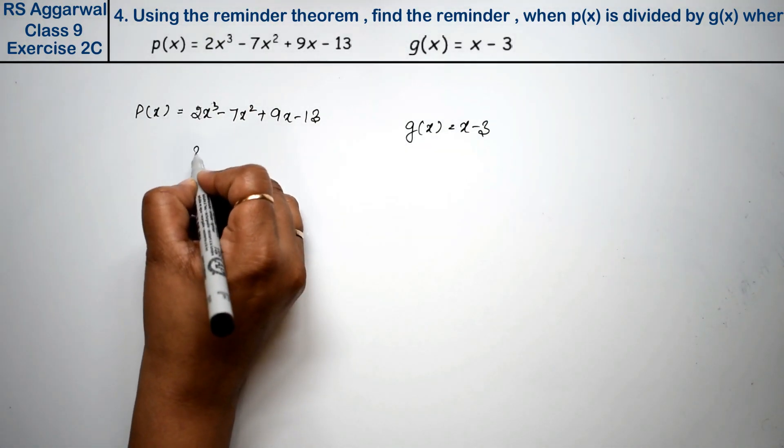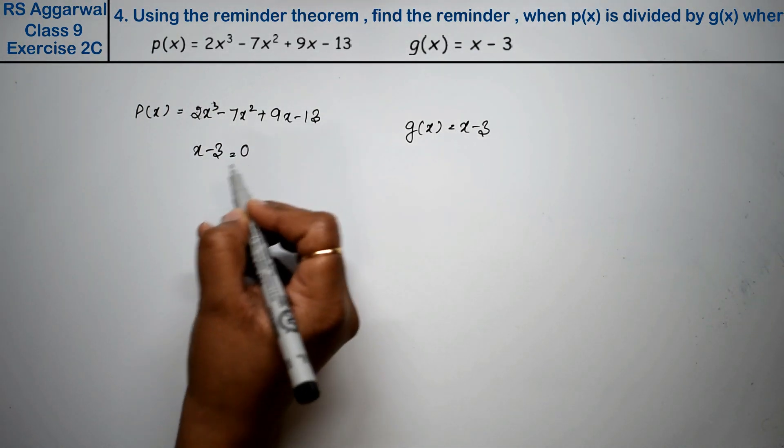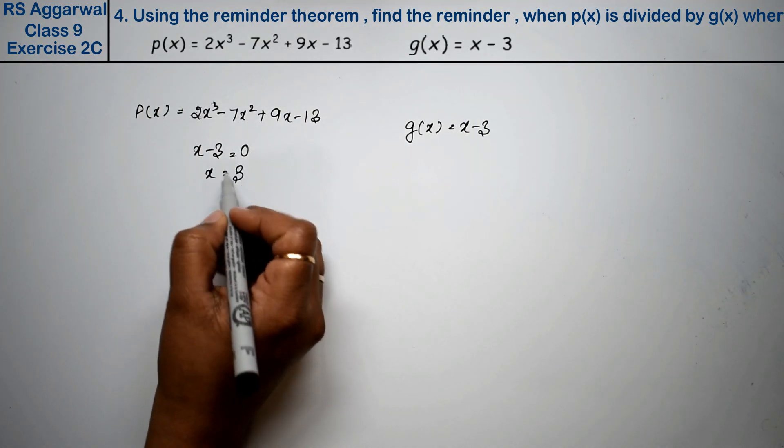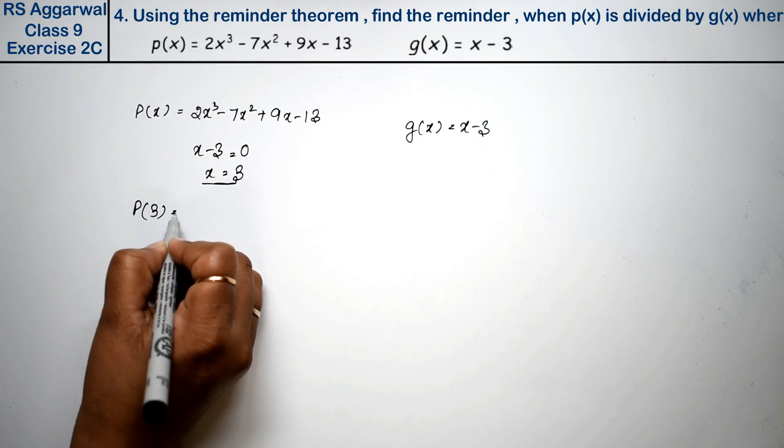Now x minus 3, which we have given as g(x), is set to 0. We will find x's value and put this x value in p(x).